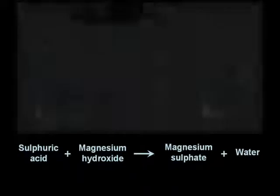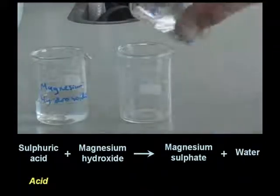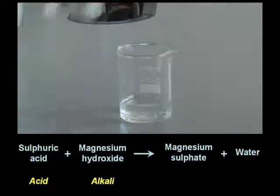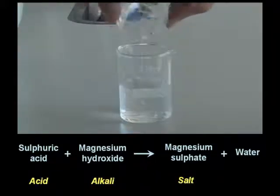Here's another example where we see an acid, sulfuric acid, reacting with magnesium hydroxide, which is an alkali, to form magnesium sulfate, which is a salt. And again, water is produced.